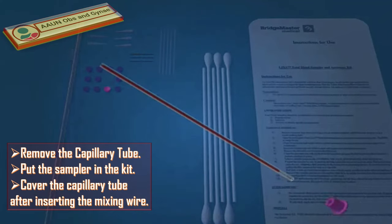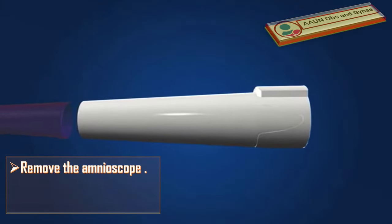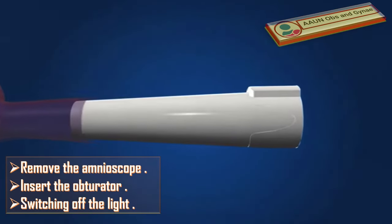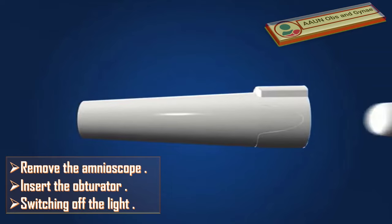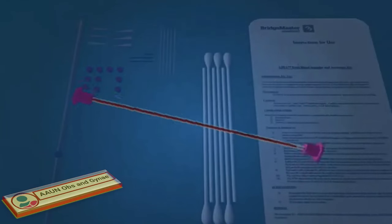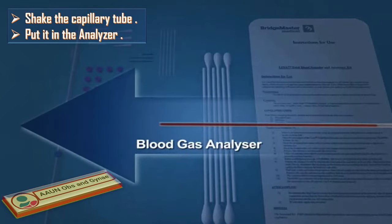Put the sampler in the kit and cover the capillary tube after inserting the mixing wire. Remove the amnioscope from the vagina, insert the obturator, and switch off the light — the light will switch off automatically. Shake the capillary tube to avoid blood clotting and put it in the analyzer to get the result.